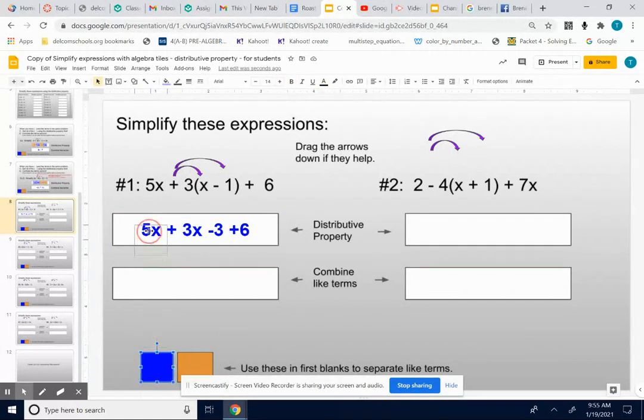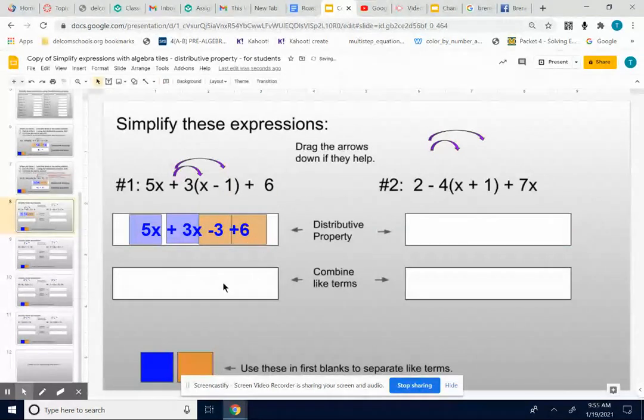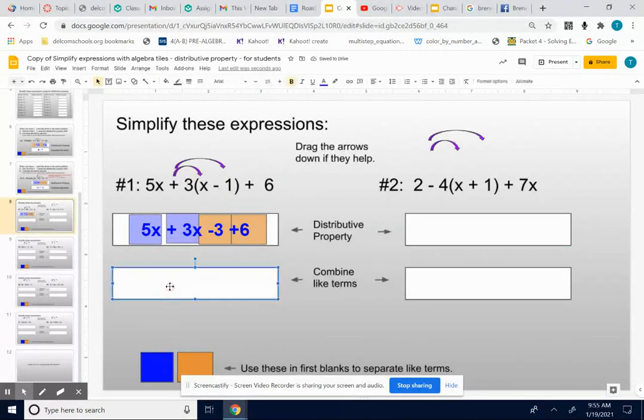So you can use these little square highlighters if you want. My 5x and my positive 3x, those are like terms because those are both terms that have an x attached. And then the negative 3 and the positive 6 are like terms because those are regular numbers. So I just combine these together.